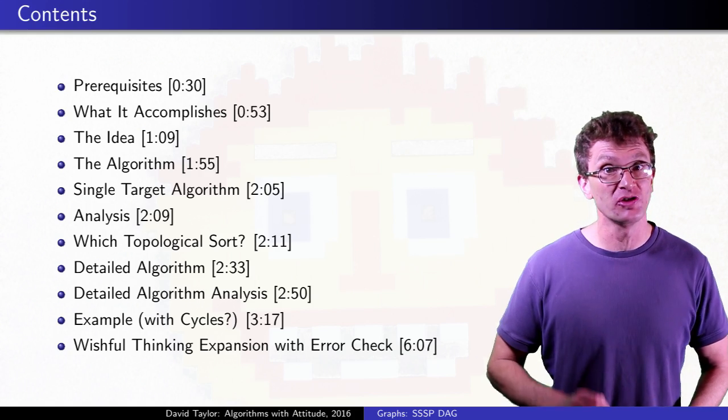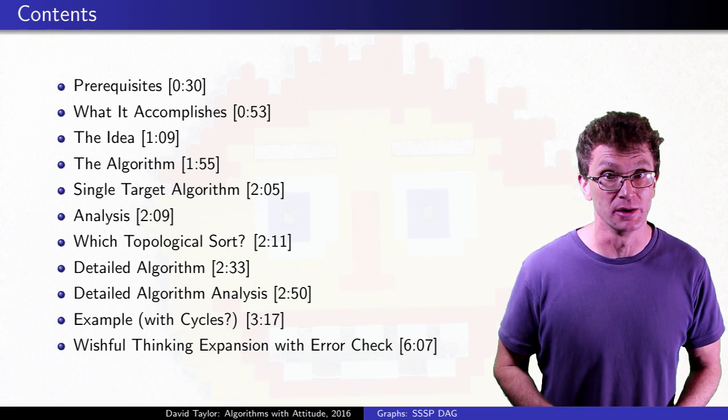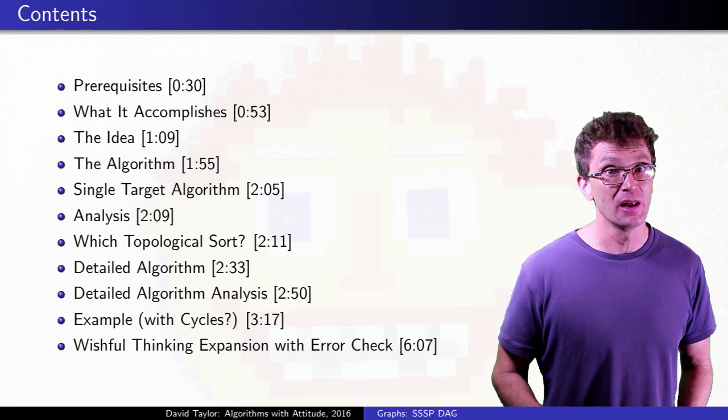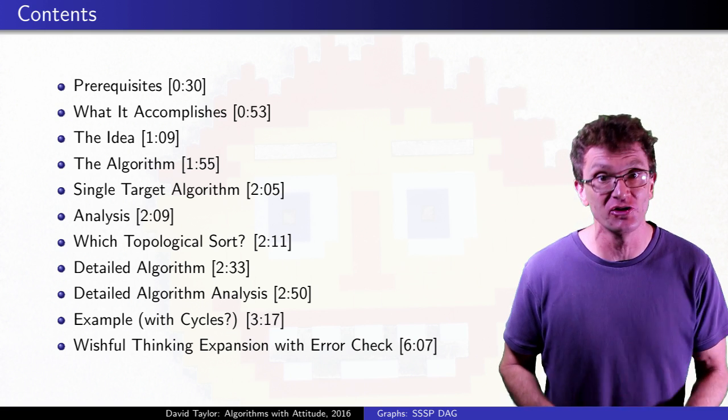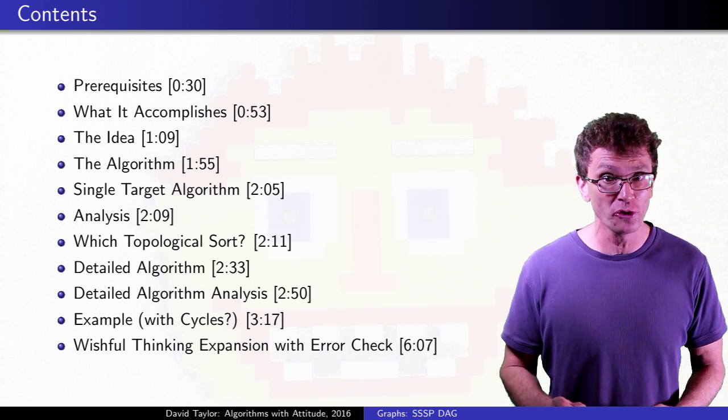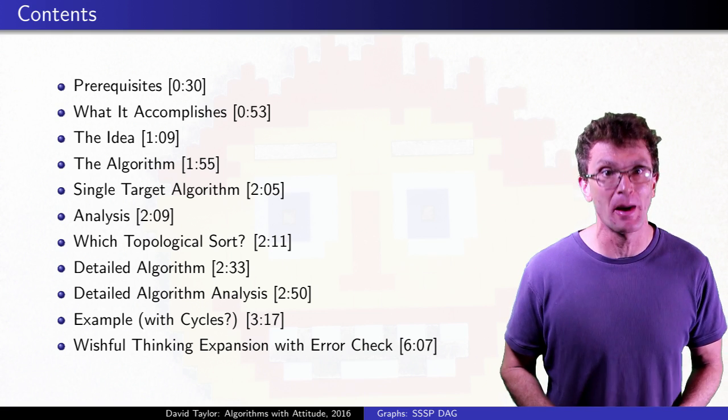After mentioning prerequisites, we'll see the algorithm idea and the algorithm, including the single target variant. I'll add some more detail and then show how that detailed version works on a slightly screwy example that has some cycles, even though it isn't supposed to, because that can show you how to push the algorithm a little past its boundaries.